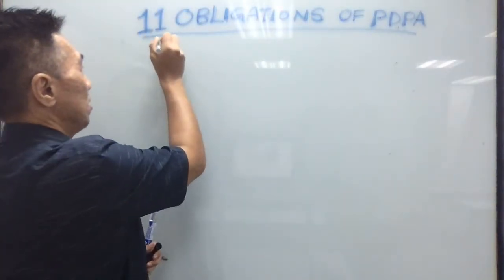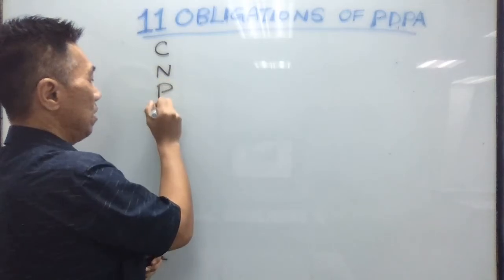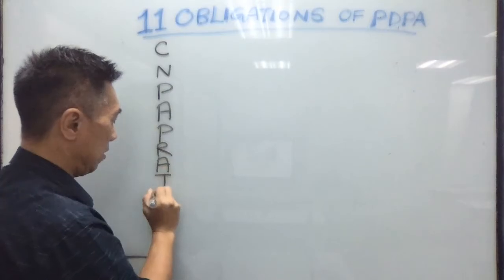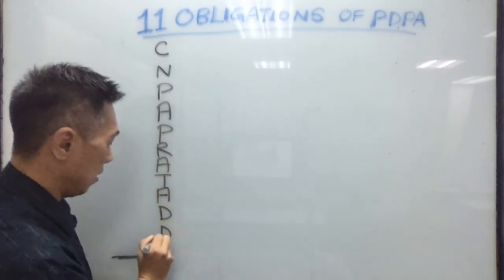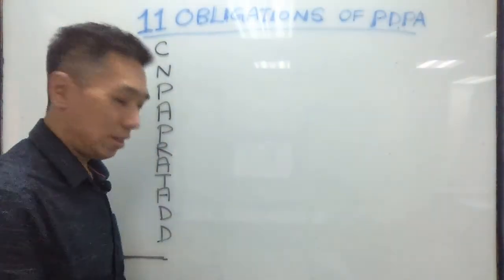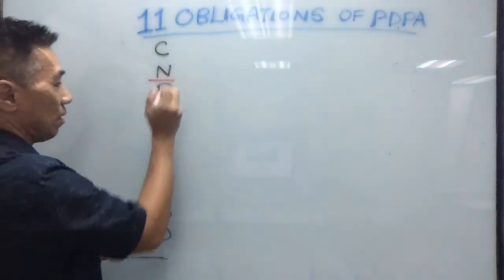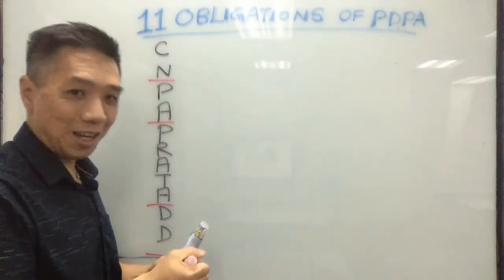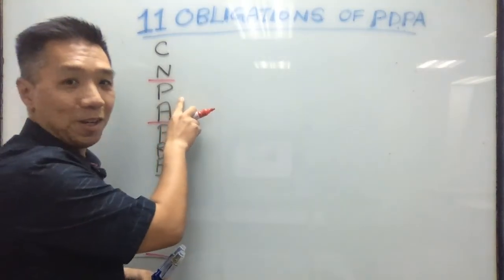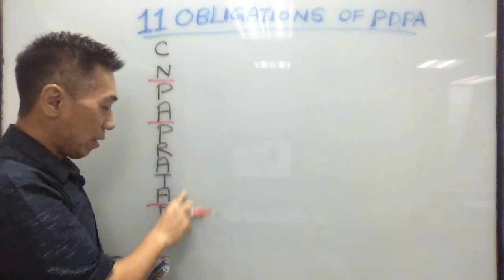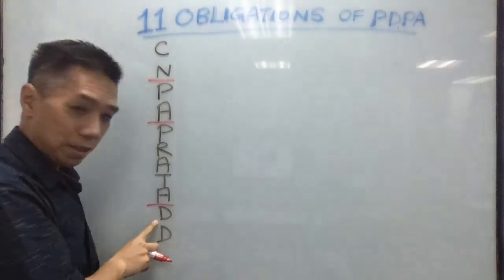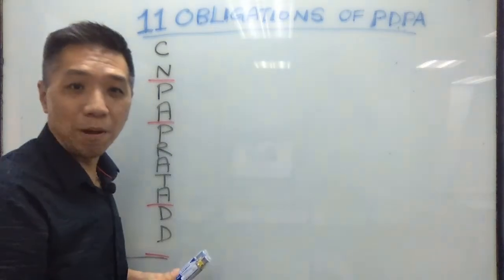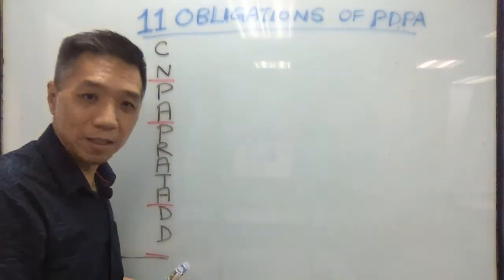I'm going to start by sharing the abbreviation we use to remember them better, and that will be C-N-P-A-P-R-A-T-A-D-D. To remember it, we say: my father, P-A-P-A, go China, C-N, to eat Prata for dinner and dance. So everyone remember: C-N-P-A-P-R-A-T-A-D-D — my father go China eat Prata for dinner and dance.